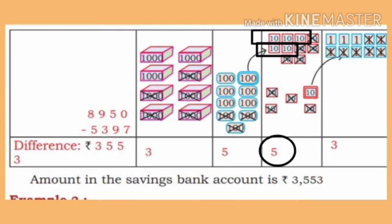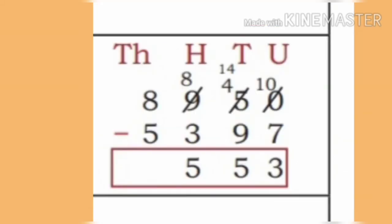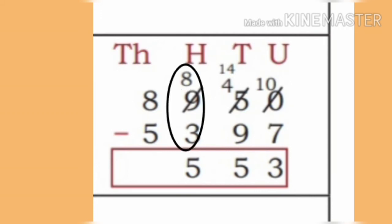Now 8 is left in the hundreds place. In the hundreds place of the Minuend, on subtracting 3 from 8, 500 remains.